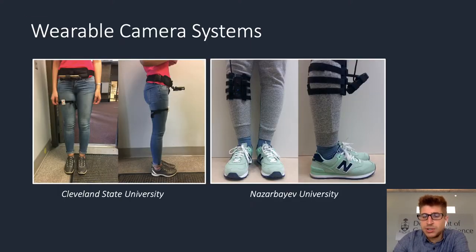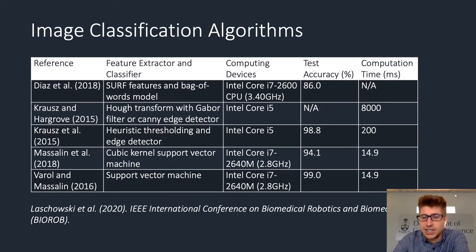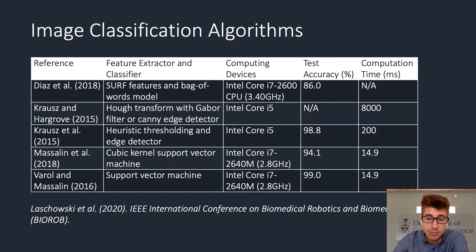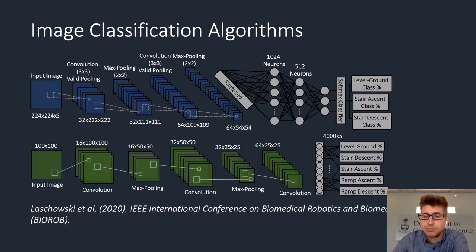A number of wearable camera systems have been used to sense the walking environment. However, the corresponding image classification algorithms have been limited to heuristics, statistical pattern recognition, or machine learning algorithms that require manual feature engineering, which can be both time-consuming and suboptimal. In contrast, deep learning can replace these hand-designed features with multi-layer networks that can automatically and efficiently learn the optimal image features directly from training data. This is the unique approach that we've taken. For more on these different image classification algorithms, please check out our 2020 BioRob paper.